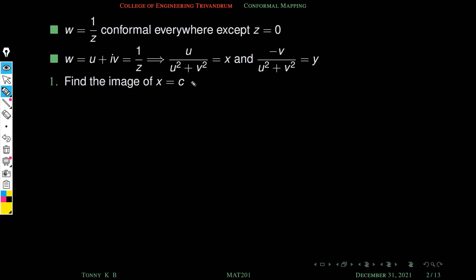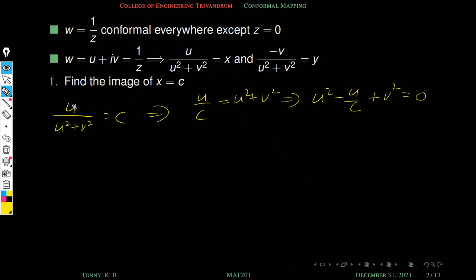For this transformation, x = u/(u² + v²). Substituting x = c gives u/(u² + v²) = c. Cross-multiplying and rearranging: u² - u/c + v² = 0. This is the relation between u and v in the w-plane.